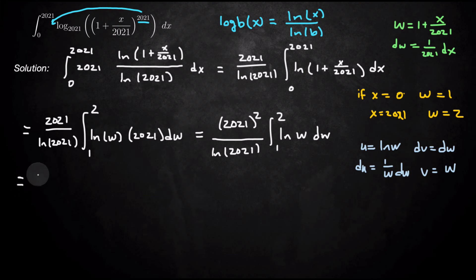So I use integration by parts. This is going to be 2021 squared over natural log of 2021 times w natural log of w minus integral of 1 dw. So actually w from 1 to 2. So that would be my antiderivative. Plug in those bounds there.